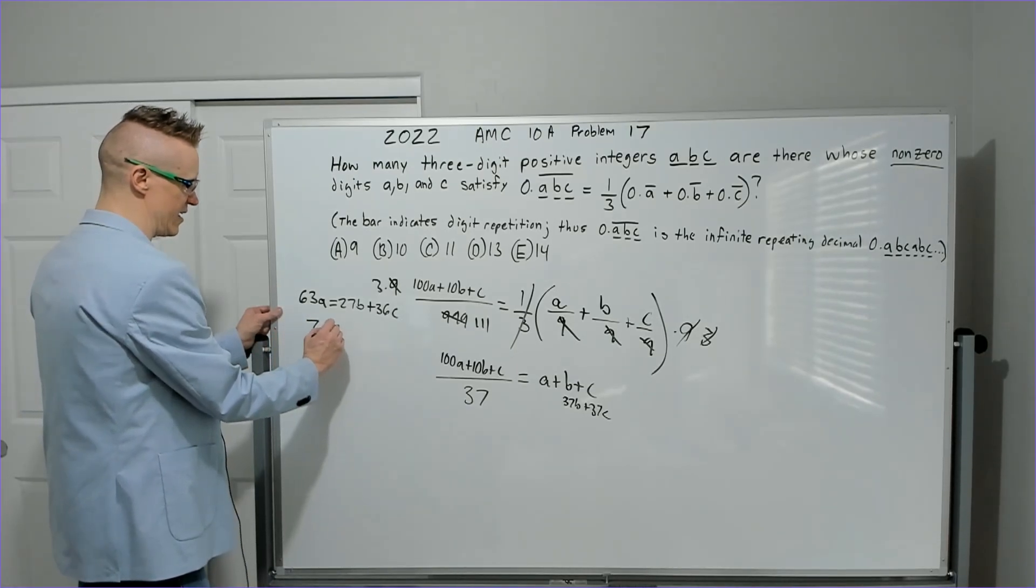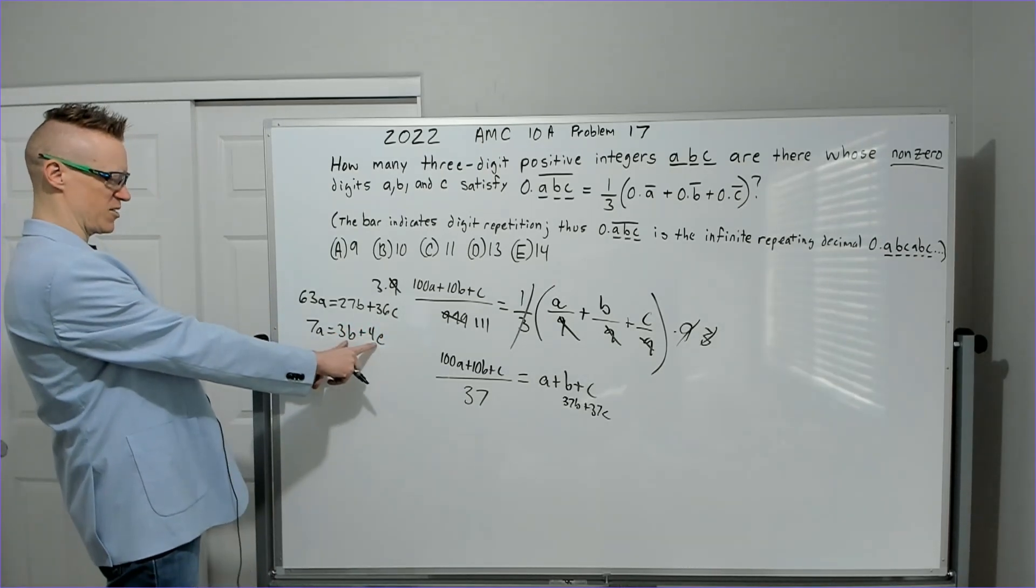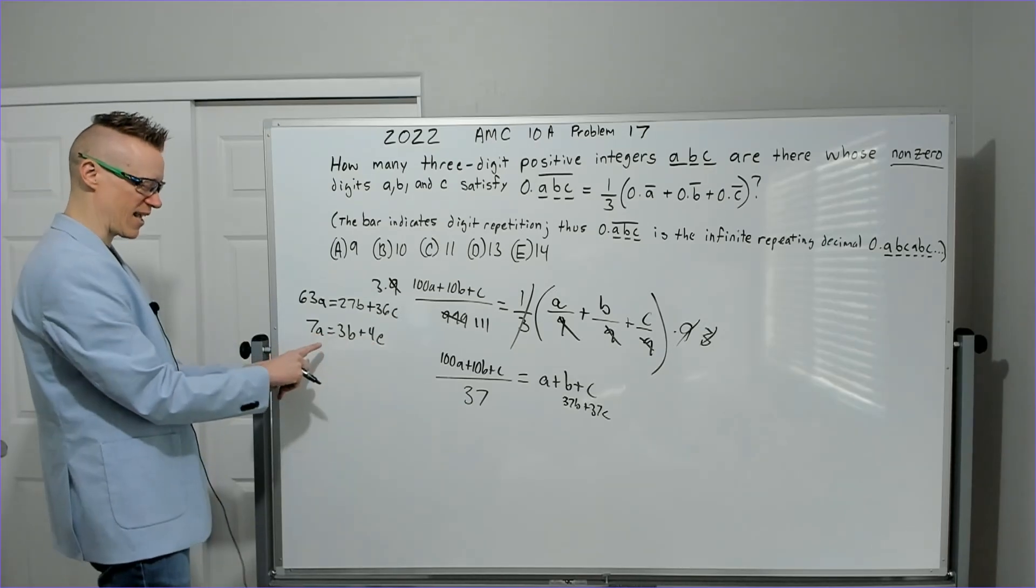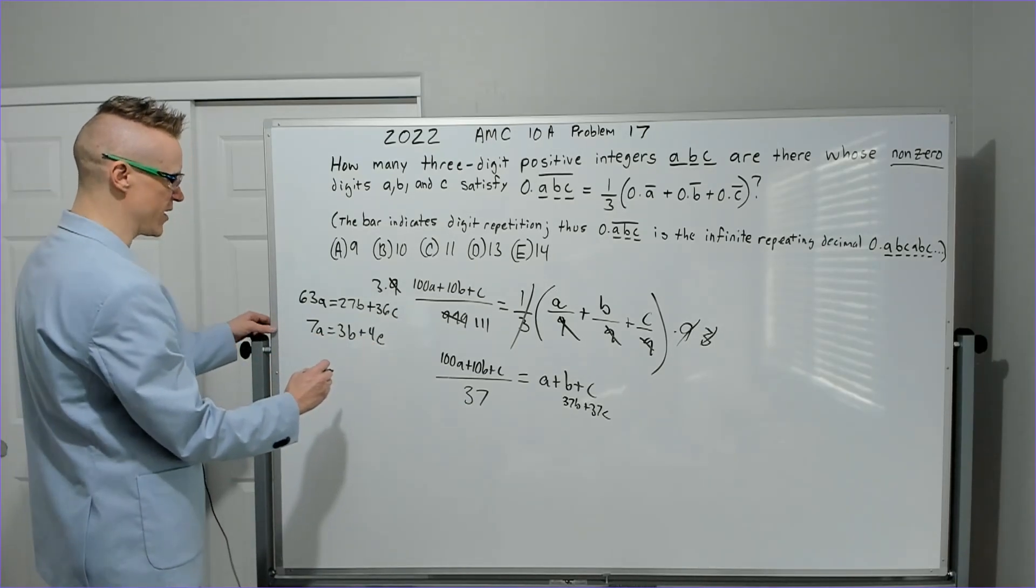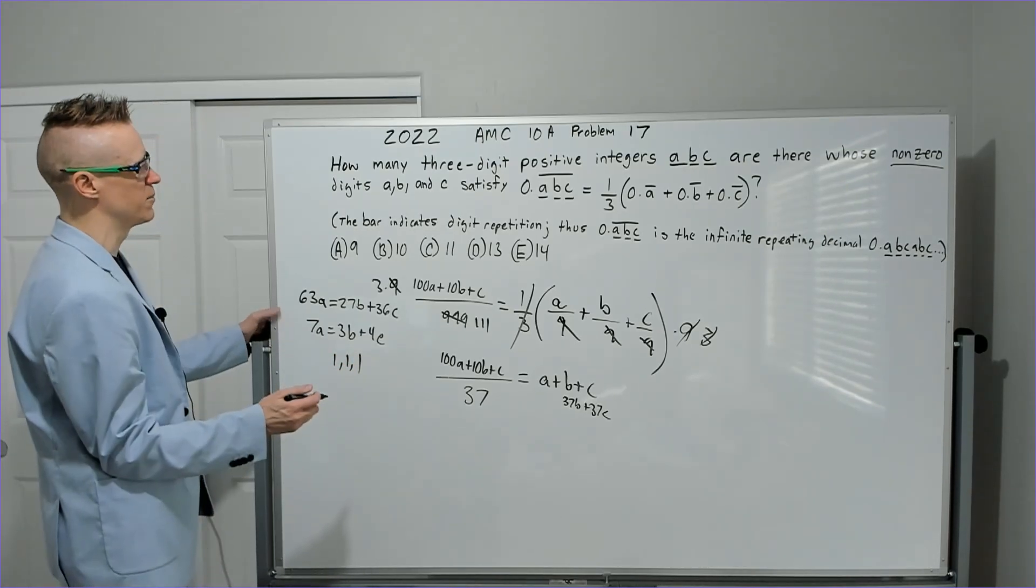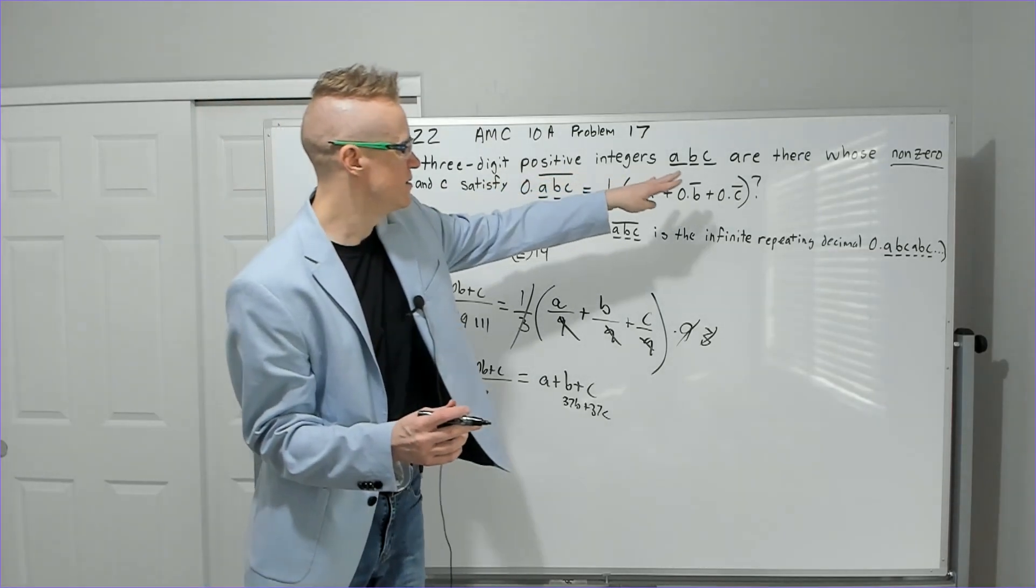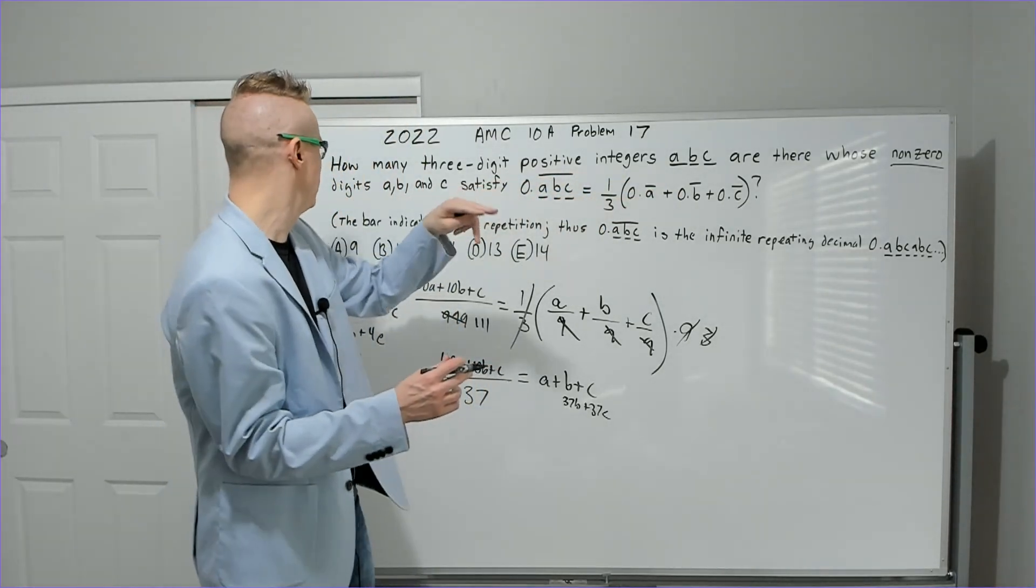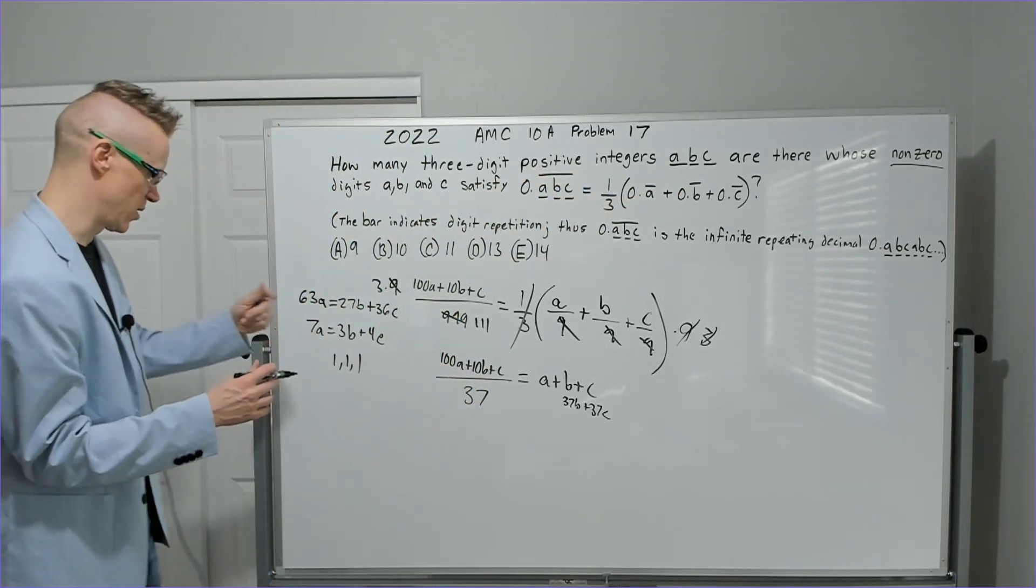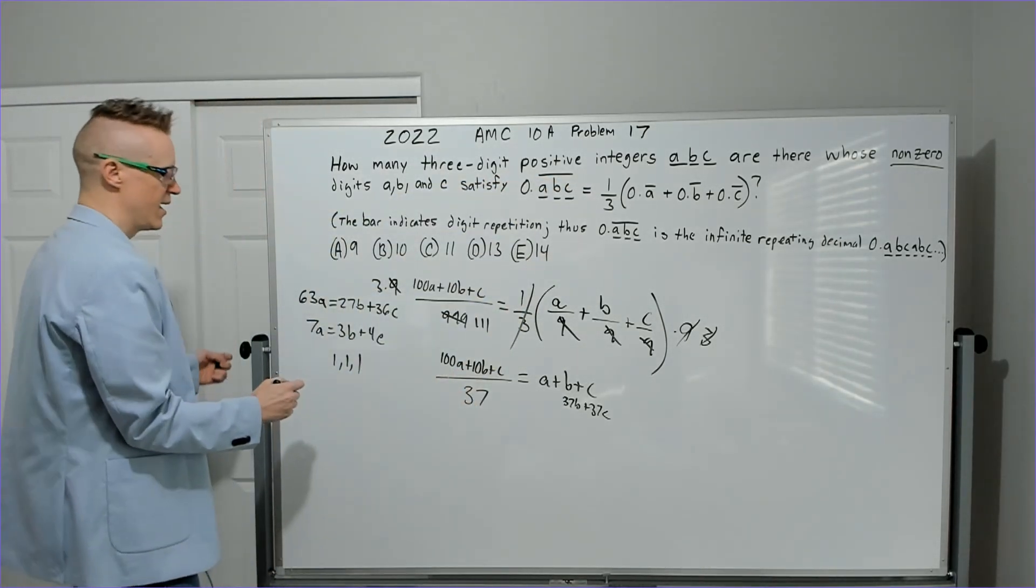7A equals 3B plus 4C. The fact that this is 3 plus 4 and it makes 7 makes me think we could probably find 111 as one of the numbers. First, go back and check: did it say they are distinct? Nope, does not say distinct.